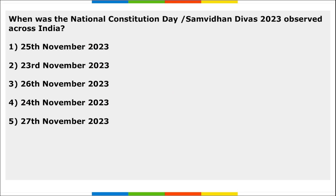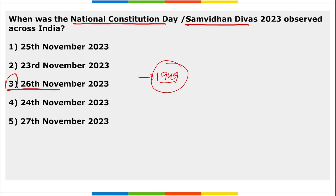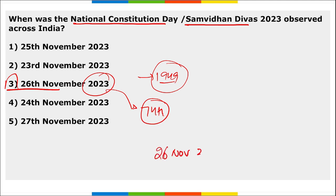Next: when was National Constitution Day or Samvidhan Divas observed across India? It is 26th November. Every year on 26th November we observe Constitution Day, first adopted on 26th November 1949. In 2023, it marks the 74th anniversary of the adoption of our Constitution of India. The first ever Constitution Day was observed on 26th November 2015.